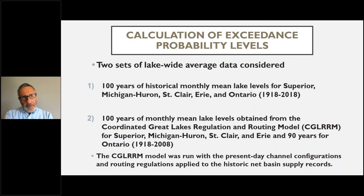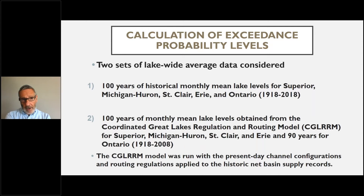To further explore the frequency of low lake levels, we decided to compare the statistical extreme distributions of two sets of data. The first is simply the observational record over the past century. The second dataset consists of modeled monthly means from the Coordinated Great Lakes Regulation and Routing Model, which is presently used for lake levels forecasting. The model was set up with the current configuration of the lakes and the existing outflow regulations in place, and was run with the net basin supply time series collected over the past century as model input.